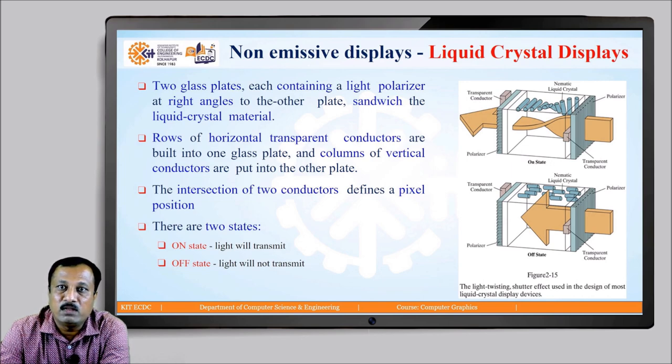The pixel exists in two states: either an on state or an off state. When the liquid crystal molecules allow light to transmit, the pixel goes into the on state. When the light is not transmitted, the pixel is in the off state.